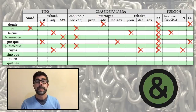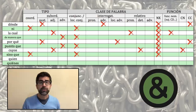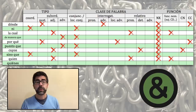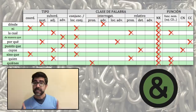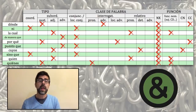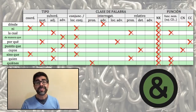'Sino que' es una locución conjuntiva que introduce proposiciones coordinadas adversativas y solo funciona como nexo. 'Quien', sin tilde, introduce proposiciones subordinadas adjetivas o de relativo, pues es un pronombre relativo, y como tal, además de como nexo, puede desempeñar dentro de la proposición alguna función nominal. Y, en último lugar, 'quién', con tilde, introduce proposiciones subordinadas sustantivas interrogativas indirectas, pues es un pronombre interrogativo que, además de la función de nexo, puede desempeñar alguna función nominal dentro de la proposición.